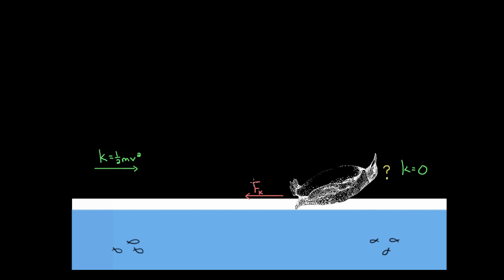But we're talking about conservation of energy here. So how can we put this idea in terms of energy? Well, the way we do it is we just say that this force of friction is doing negative work on the penguin. And we know the work is negative because the force of friction is directed in the opposite direction to the penguin's motion.